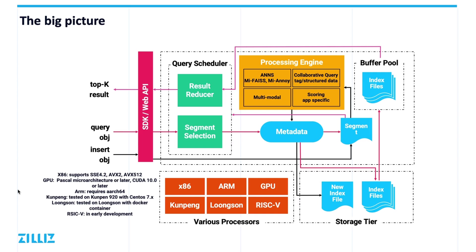The second part is the data management function. We want to provide an unstructured data service, so functional data management is critical. Milvus supports data partitioning, data sharding, deletion of vectors, and stream injection. The third part is the adoption and improvement of ANN algorithm libraries. Milvus provides state-of-the-art vector search performance by adopting and improving on well-known ANN algorithm libraries such as FAISS and Annoy. The fourth part is support for many application development environments. To enable AI developers to build their applications with Milvus, we provide several SDKs, including Python, C++, Java, and Go.